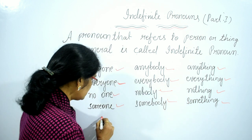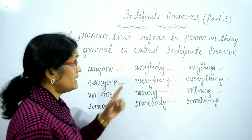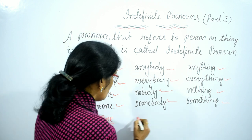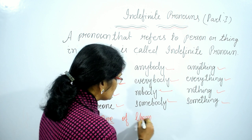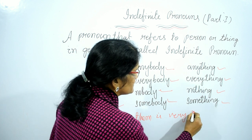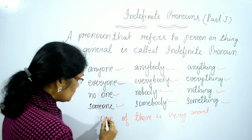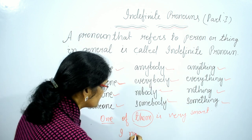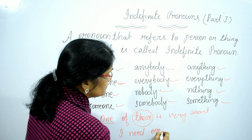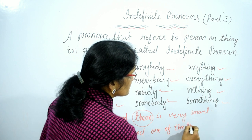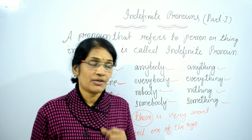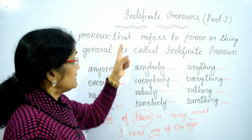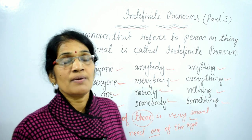Another word, One — O-N-E — is also an indefinite pronoun, which is used both for persons and things. For example: 'One of them is very smart.' Here, one is used for persons. And in the second sentence, 'I need one of the toys.' Here, one is used for things. So the word One, as an indefinite pronoun, is used both for persons and things.